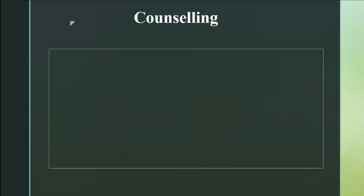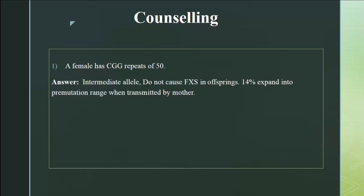Full mutation repeats in Fragile X are more than 200. Pre-mutation is 55 to 200. Consider a female with CGG repeats of 50 — this is in the gray area or intermediate allele range. How will we counsel? An intermediate allele won't cause full expansion in the next generation. However, 14 to 15 percent will expand into a pre-mutation range when transmitted by this mother. She herself will not have Fragile X and can be reassured about that.